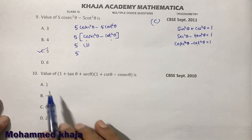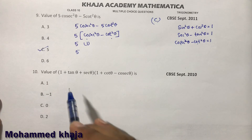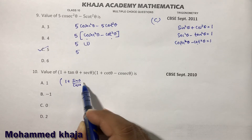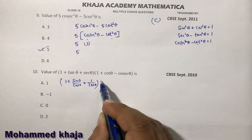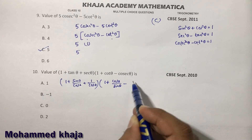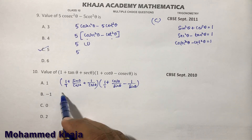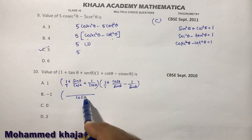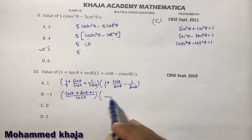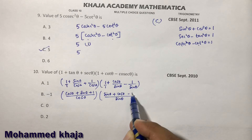Find the value of 1 plus tan plus sec times 1 plus cot minus cosec. To solve this, change all values in terms of sin and cos. So: 1 plus sin theta by cos theta plus 1 by cos theta, times 1 plus cos theta by sin theta minus 1 by sin theta. Take LCM in both terms — LCM for the first bracket is cos theta, giving cos theta plus sin theta plus 1 over cos theta; LCM for the second bracket is sin theta, giving sin theta plus cos theta minus 1 over sin theta.